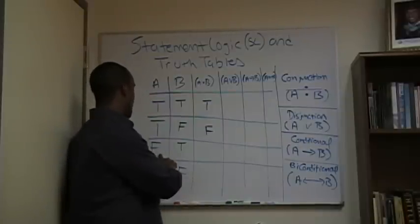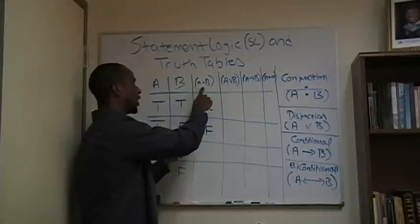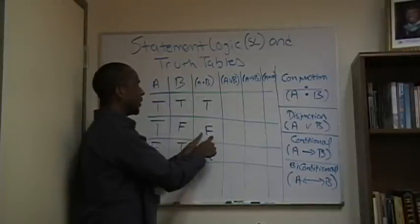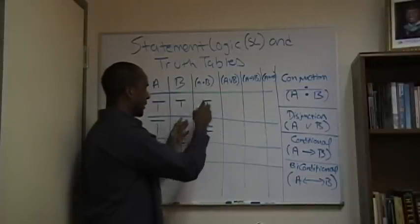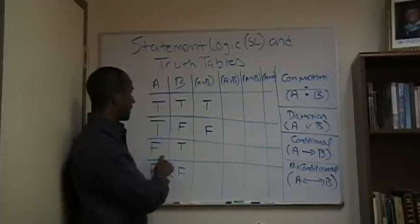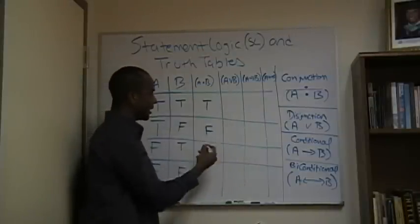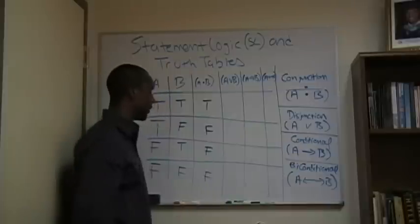Okay, if I recognize that the addition of any falsity to my conjunction leads to the falsity of the statement, then I realize that wherever there is a false claim made, my conjunction will be false. So I can fill in the rest, right? I immediately know then that both this is going to be false and this is going to be false.